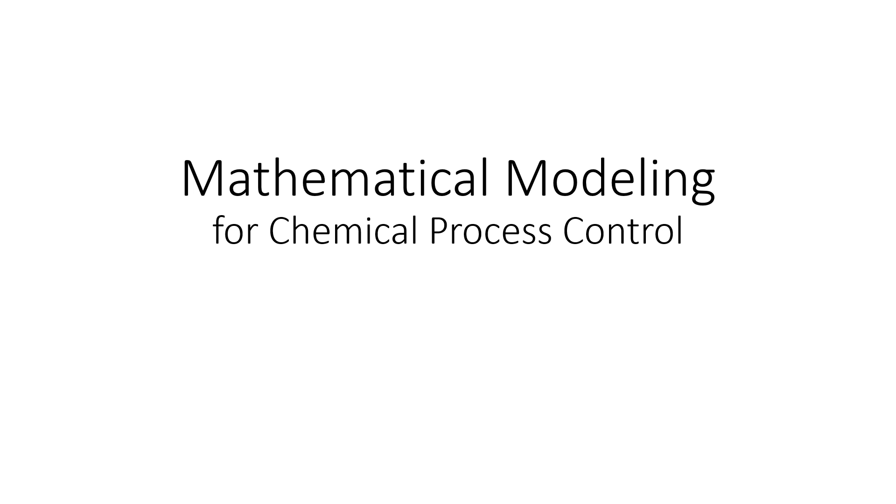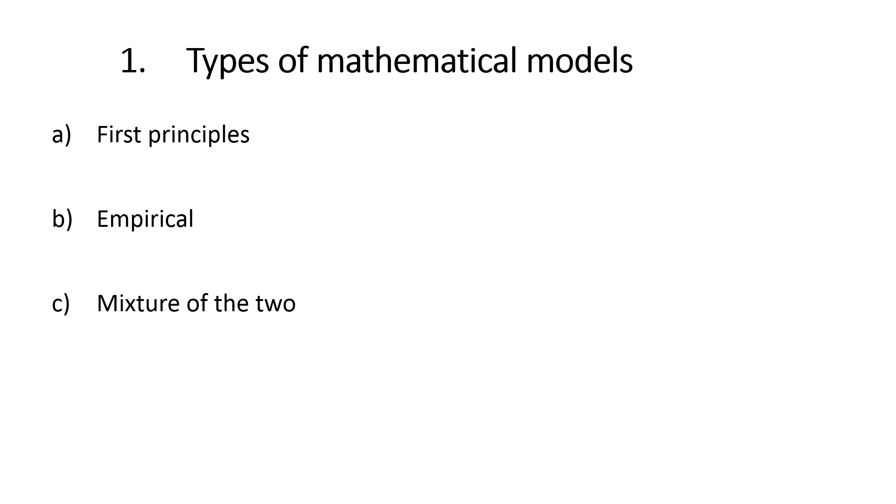We're going to cover mathematical modeling for chemical process control. Different types of mathematical models that you can have, first being first principles, so purely from fundamentals that you build up as a system of equations to describe input-output relationships.